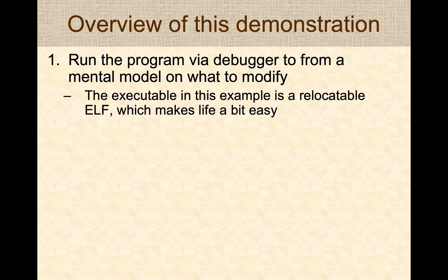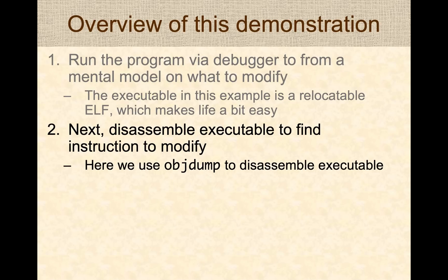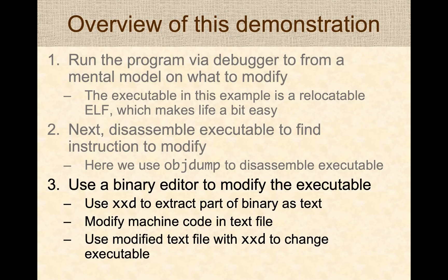Here's what we'll do in this demonstration. First, we'll run the program in a debugger to form a mental model of where we want to modify, since programs can be large and the debugger helps us narrow down the scope. Next, we'll disassemble the executable and find the specific instructions we want to modify. Then we'll extract those instructions into a text file, modify them, and use the text file to update the executable.